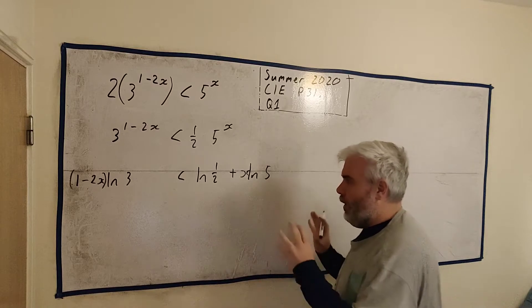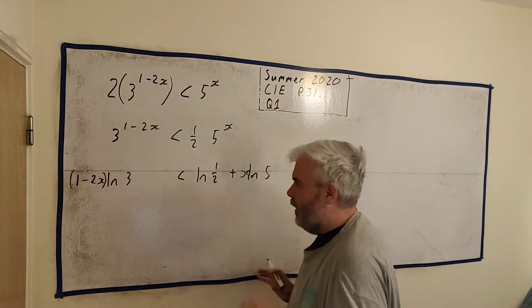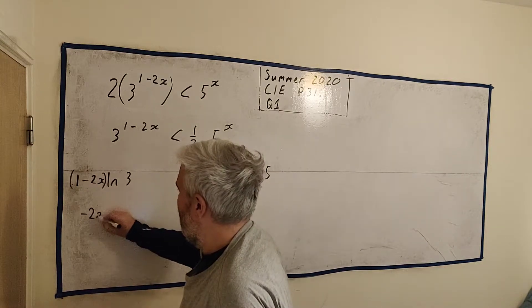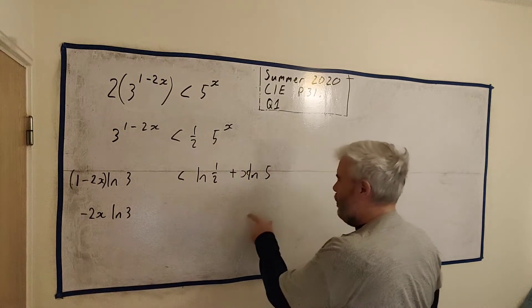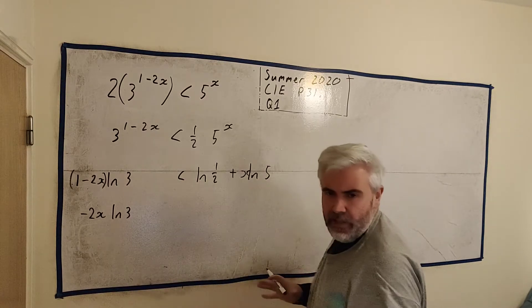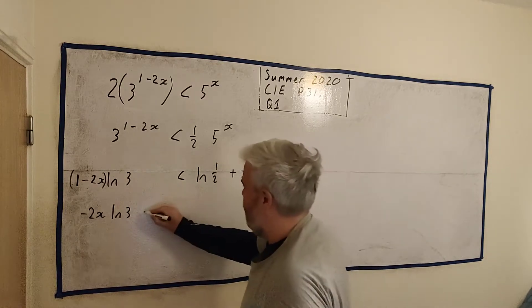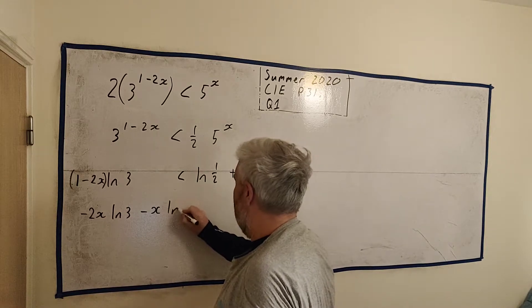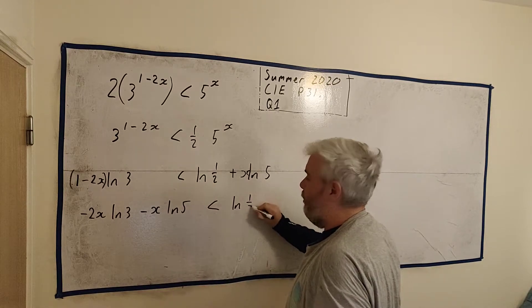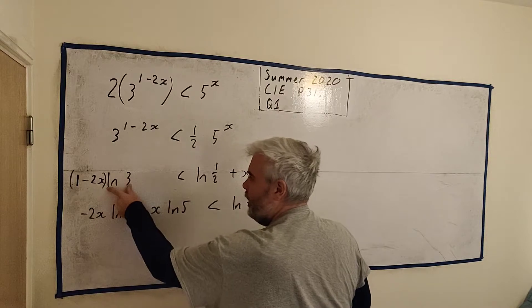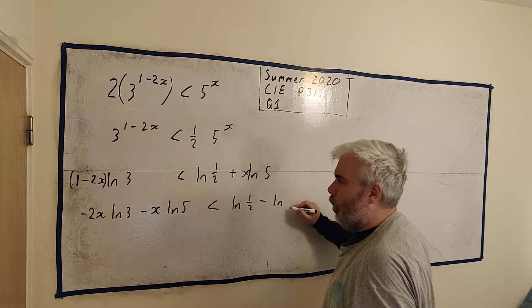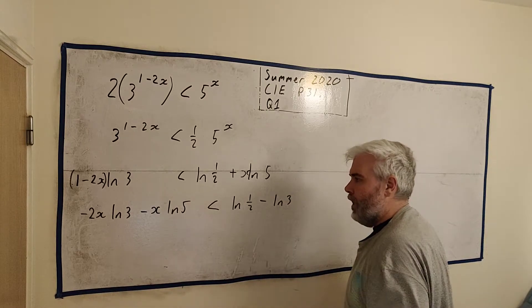Right, let's rearrange this so x is on the left and everything else is on the right. Here's an x minus 2x minus 2x natural log 3. Where's the other x? Here's another x. And if we take it away from both sides, that's okay. That's not going to change any of the inequality. If we take this away from both sides, we'll have minus x natural log 5. And what does that leave? We'll have a natural log half. And there's still a term here, 1 multiplied by natural log 3. Let's take that away from both sides. Minus 1 multiplied by natural log 3.